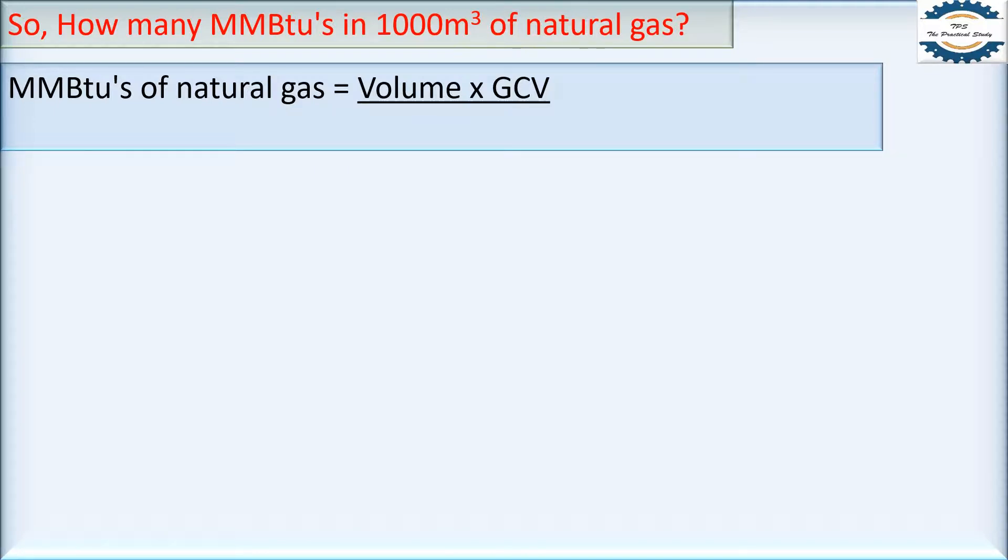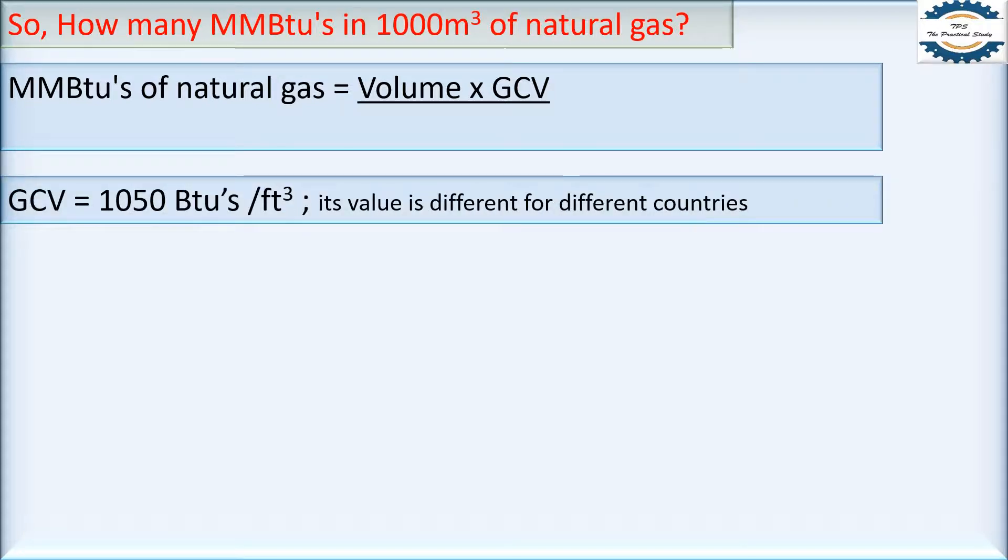So MMBtu's of natural gas, as we have already discussed, is equal to volume multiplied by GCV. GCV is equal to 1050 BTU's per feet cube. In our country, you can find this value in your gas bill.